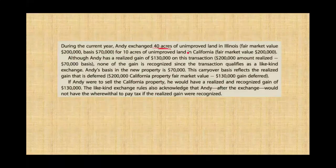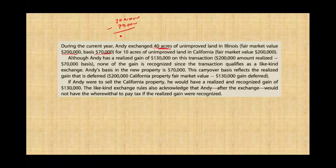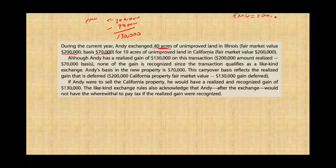Example: Andy exchanges 40 acres of unimproved land in Illinois with a fair market value of $200,000 and a basis of $70,000, for 10 acres of unimproved land in California with a fair market value of $200,000. Andy has a realized gain of $130,000 ($200,000 minus $70,000). None of the gain is recognized since the transaction qualifies as a like-kind exchange. Andy's basis in the new property is $70,000 — the carryover basis reflects the realized gain that is deferred.